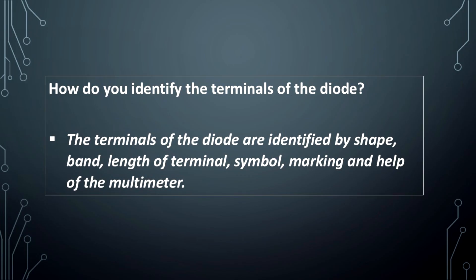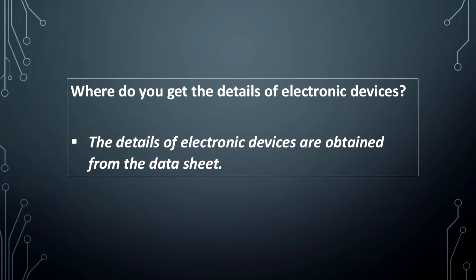How do you identify the terminals of the diode? The terminals of the diode are identified by shape, band, length of terminal, symbol, marking, and help of the multimeter.